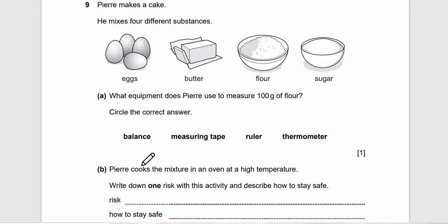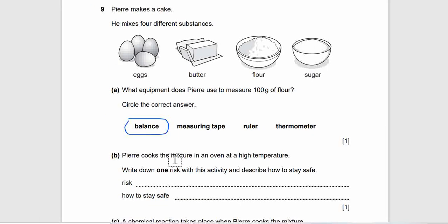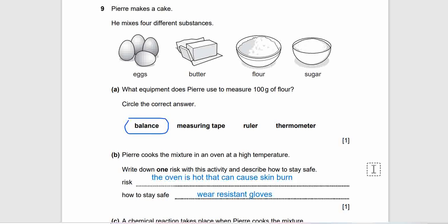Question 9B. Pierre cooks the mixture in the oven at a high temperature. Write down what risk to this activity and describe how to stay safe. Are you ready with your answer? What's the risk and how to stay safe? This is the example of the correct answer. The oven is hot that can cause skin burn. How to stay safe? Wear heat resistant gloves.